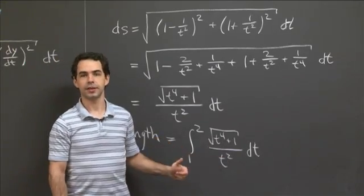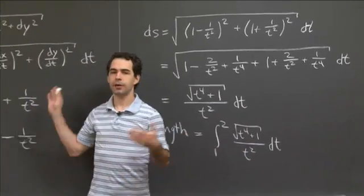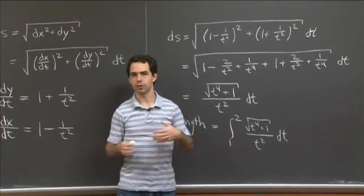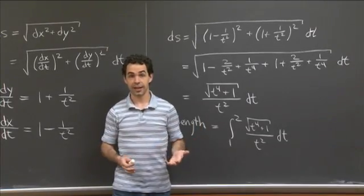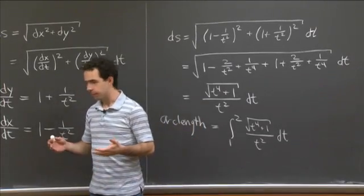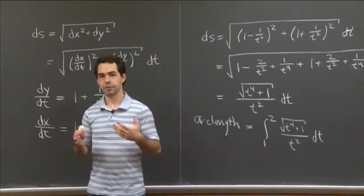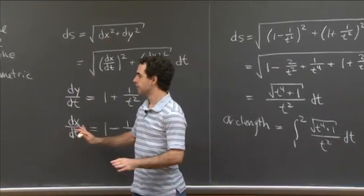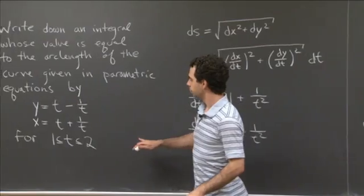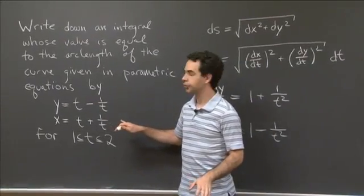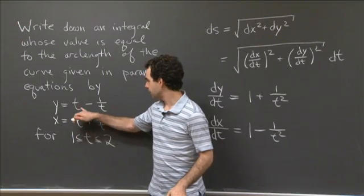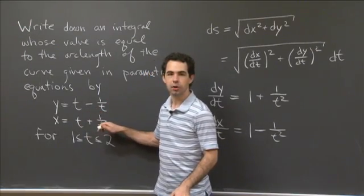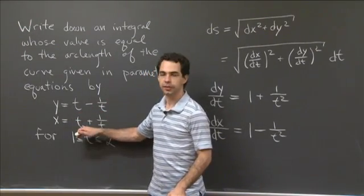One more thing I want to say about this question is that we did all this without ever trying to draw the curve or think about what the curve looks like. So it's not that hard to get some sort of basic sense of the behavior of this curve. For example, when t gets very, very large, we see that the 1/t gets small, so x and y get close to each other. But x is just a tiny bit bigger.